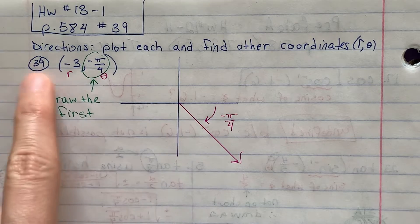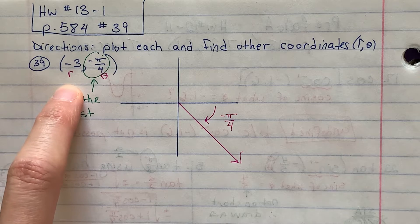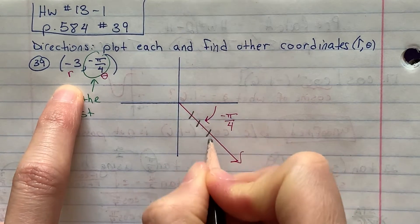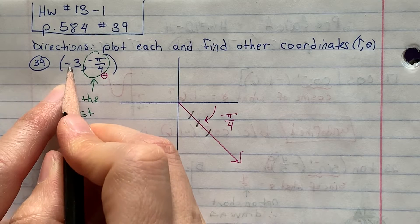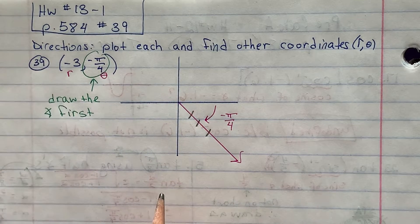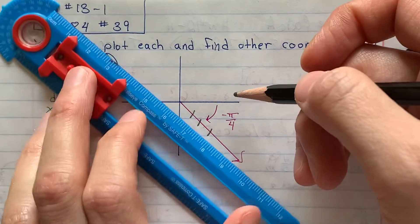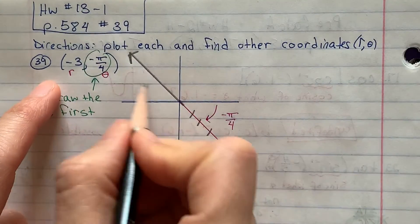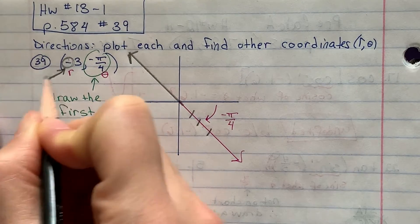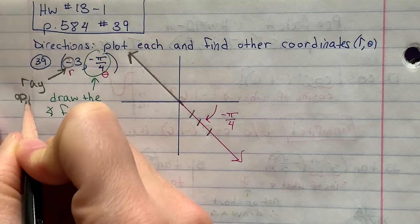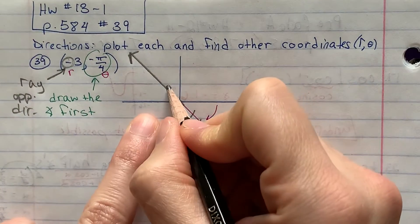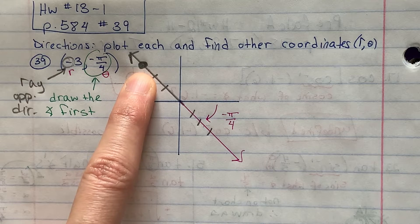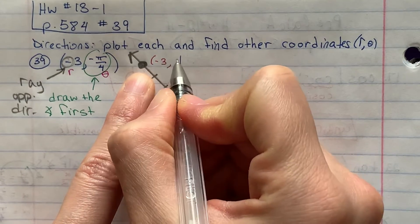Now the next part says the radius would be negative 3. If this said r equals positive 3, I would go 1, 2, 3 and put a dot. But because it says negative, that's telling me to go on the ray in the opposite direction. That means I'm going to use my straight edge and continue my angle in the opposite direction. I knew it was going to be in the opposite direction because of this negative sign, which tells me to draw the ray in the opposite direction. So I go 3 spaces — 1, 2, 3 — and that's how I plot that polar coordinate.